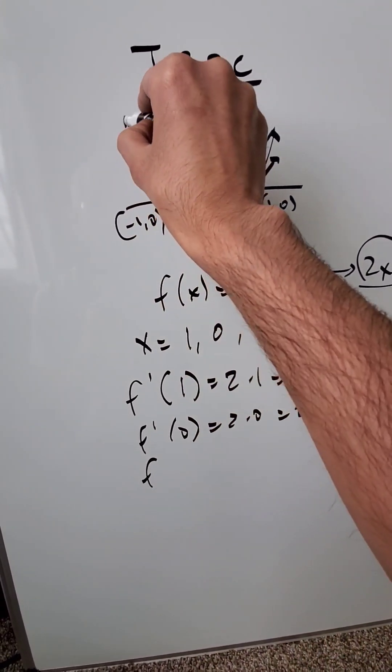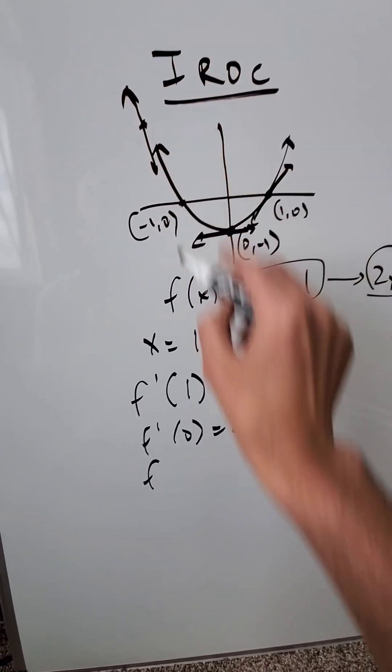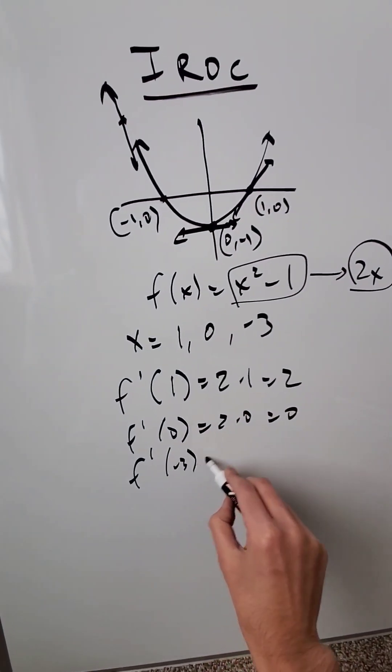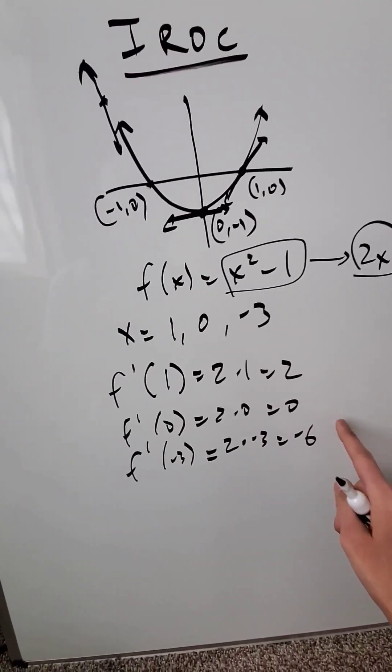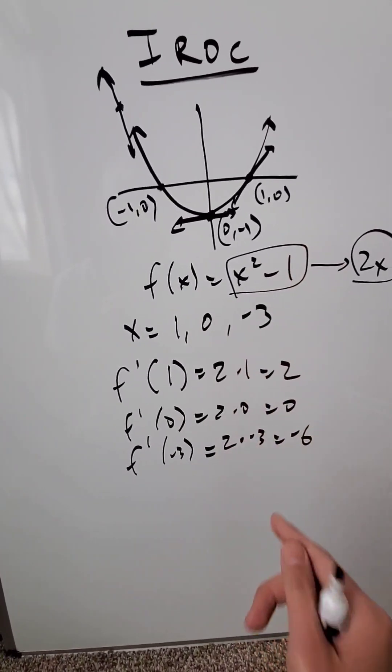What about at a value of minus 3? It would be a value right over here and it would be a steep tangent line pointing downward. You'll do 2 times minus 3 and your slope will be minus 6. These are your instantaneous rate of changes of that function at particular points.